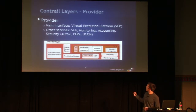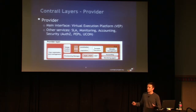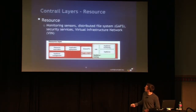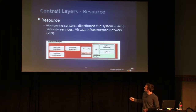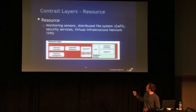Besides that, we also have accounting and monitoring agents. The accounting service provides an API to the gathered monitoring terms which were aggregated from the lower resource layer. At the resource layer we have resource reservation services, appliance management, a distributed file system, security services, authentication, and policy enforcement points. We also have appliance hosting services providing virtual infrastructure network, and monitoring services. These monitoring services provide monitoring terms which are then aggregated up to the provider level.